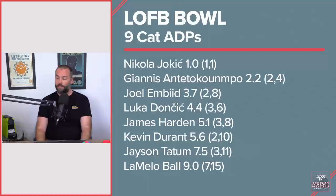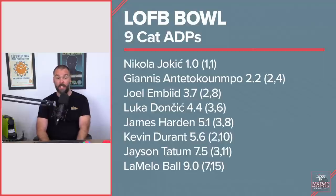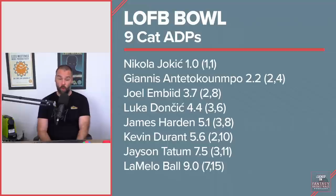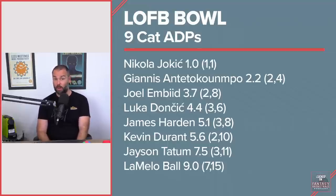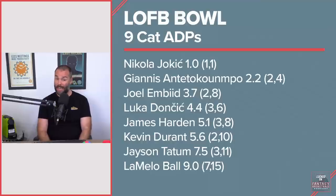Harden was at 5.1 with a 3 to 8 range. I got him at pick 17 in the 30-deep league, which was wild to me. Kevin Durant at 5.6 with a pretty wide range — he went at 10 in one draft but also went at 2. Tatum went at 7.5, highest of 3, which is early, and lowest of 11.